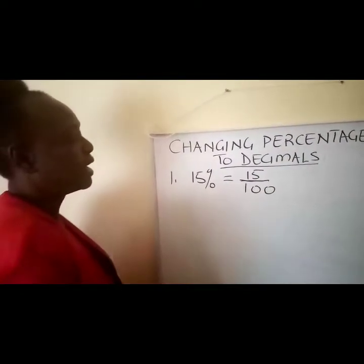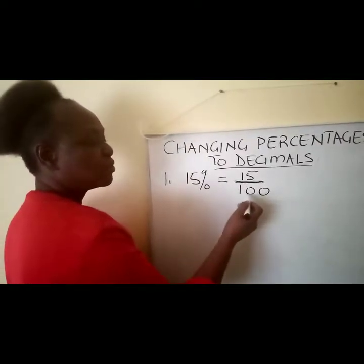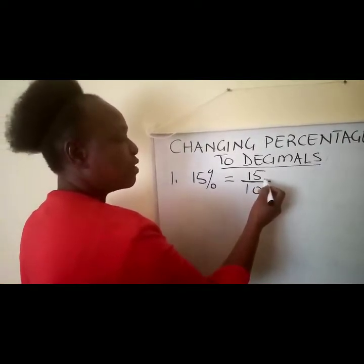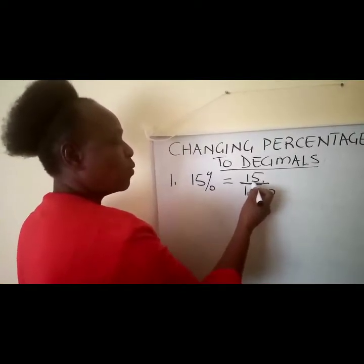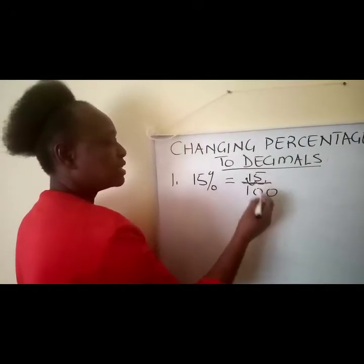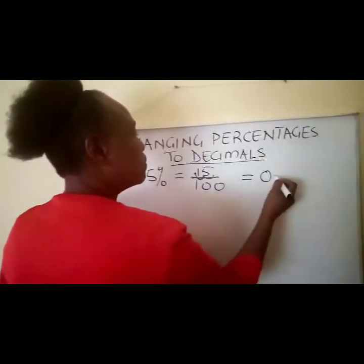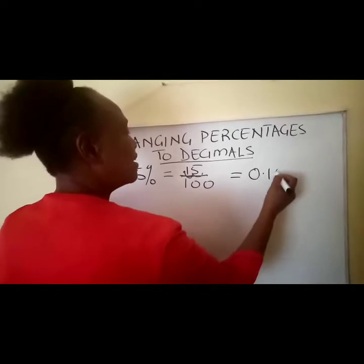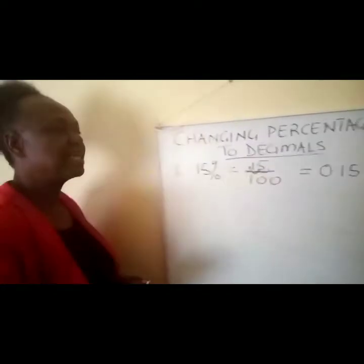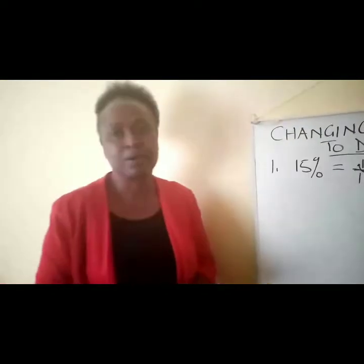We are aware that when we are dividing by powers of 10, if it's 100 we move our comma one, two places. So this is going to be 0.15. That is how we make it a decimal.